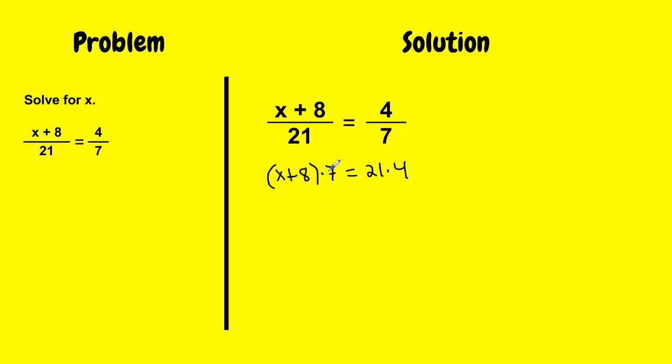And now I'm going to use the right-hand distributive property. So I get x times 7 plus 8 times 7 equals 21 times 4, which is 84. And then, since I don't see a coefficient, a number in front of the x, I know there's only one x here. So I can put the one there to remind myself of that. And I get 7 times 1 is 7x plus 56 equals 84.